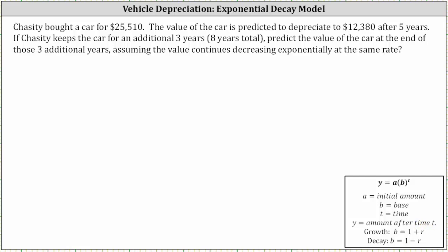Let's actually change the variables and use the equation v equals a times b raised to the power of t. From here we know a, the initial or starting amount, is $25,510. We also know the value is predicted to depreciate to $12,380 after five years, which means when t is equal to five, or five years, the value v is $12,380.